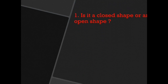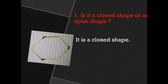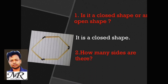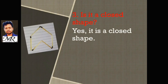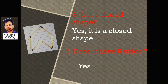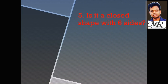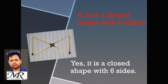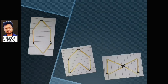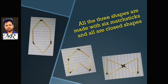Look at the shape. Is it a closed shape or an open shape? It is a closed shape. How many sides are there? It has 6 sides. Yes, it is a closed shape with 6 sides. All 3 shapes are made with 6 matchsticks and all are closed shapes.